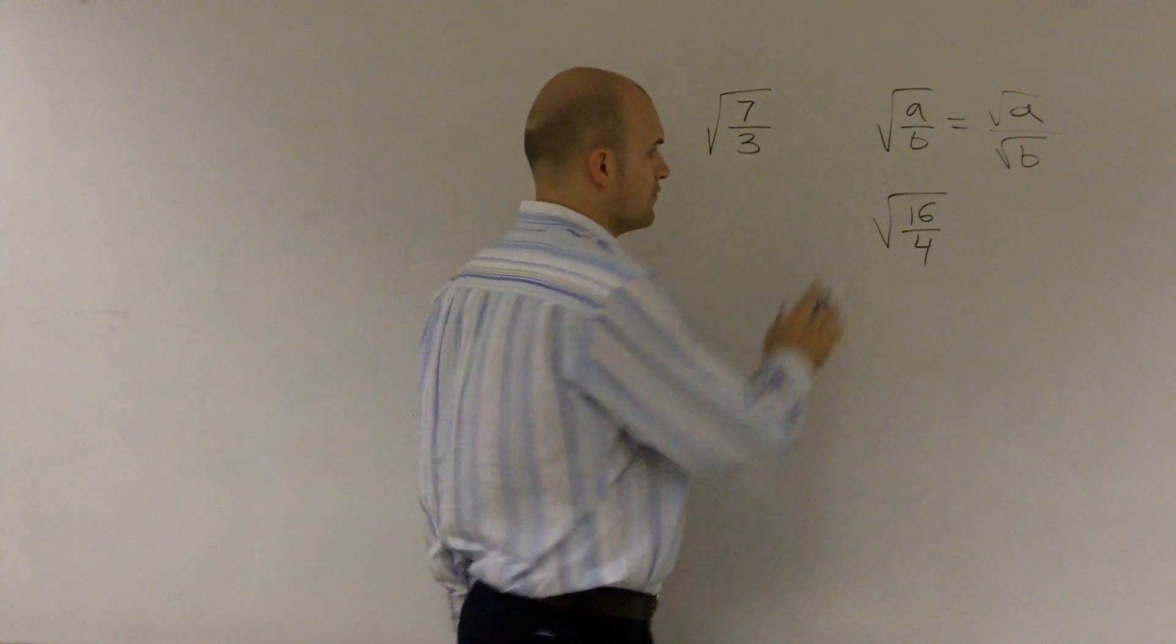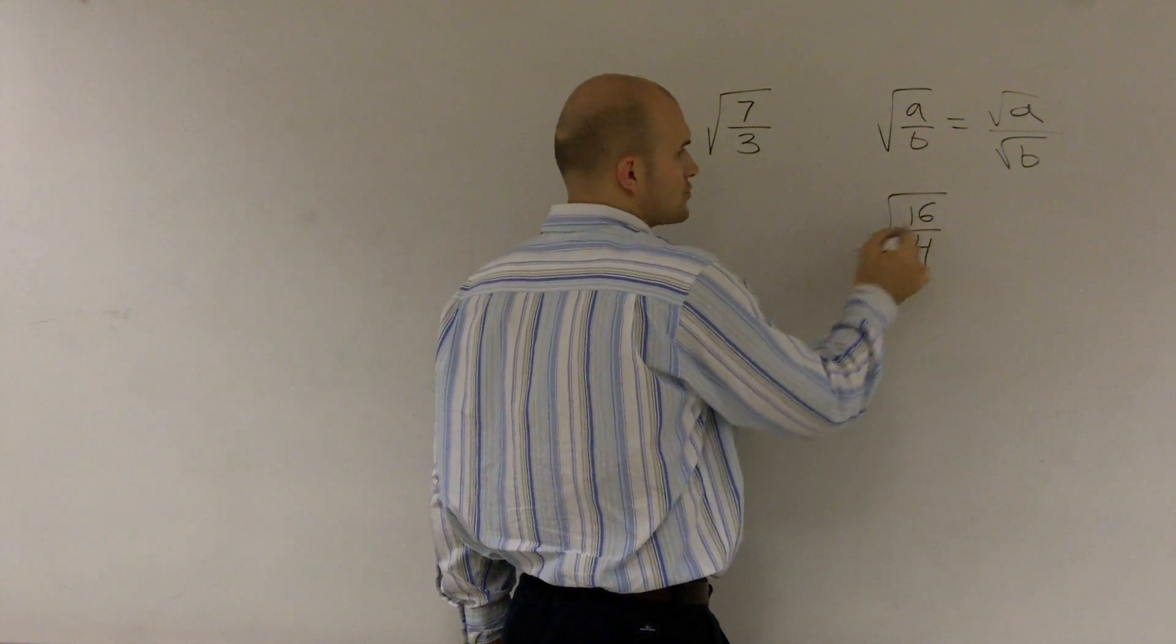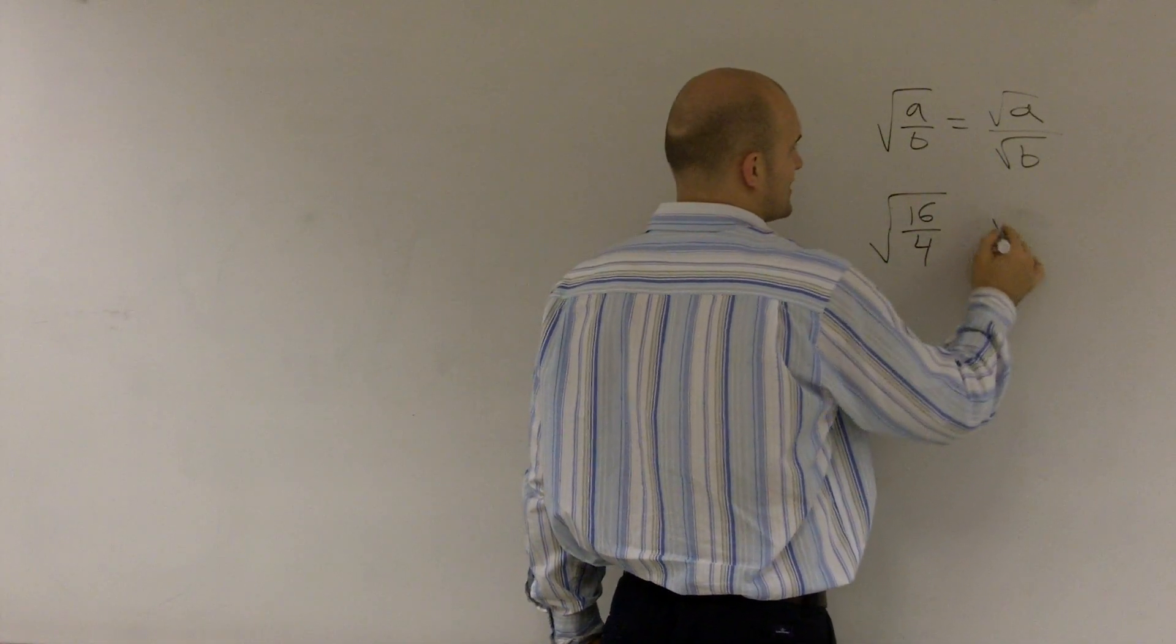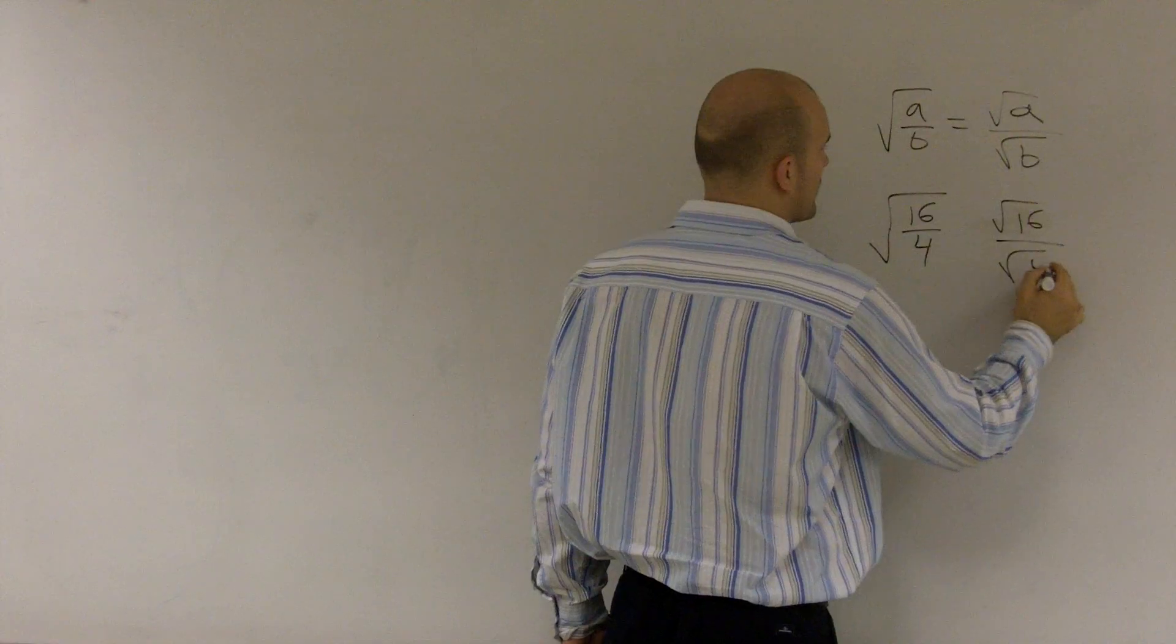OK, so the square root of 16 over 4. Square root of 16, we honestly know is, or sorry. So we can rewrite this as the square root of 16 over the square root of 4.